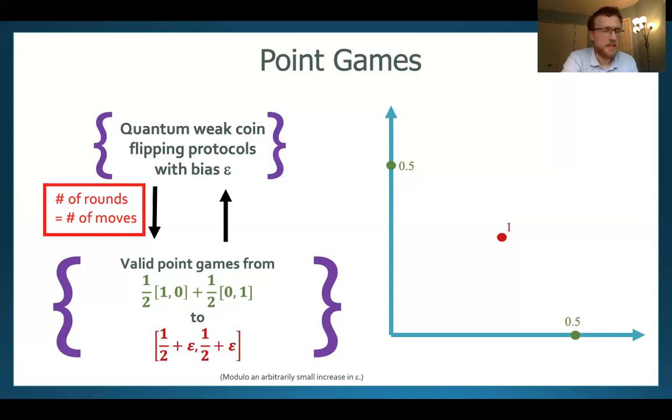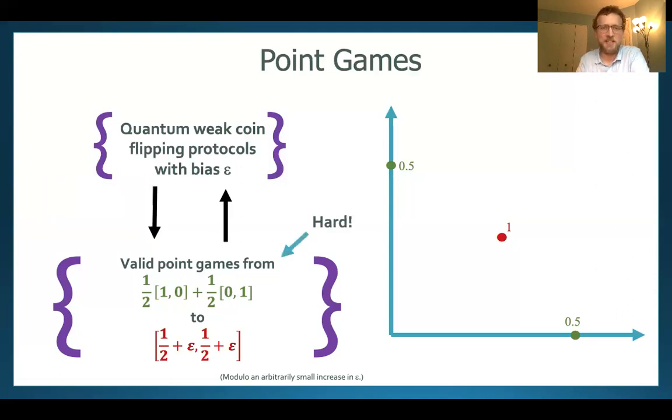So that's essentially what the communication efficiency question comes down to. Okay so if I'd seen this for the first time I would probably think that this would be easy from here on because we have this nice characterization. Unfortunately it's not because valid point games actually turn out to be really hard to construct. If you try to just search them out by computer you'll probably find it's a huge search space and a really complex one. So taking the direct approach to this turns out not to be so easy.